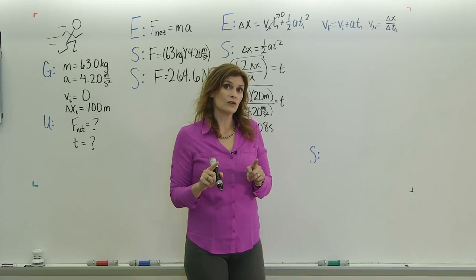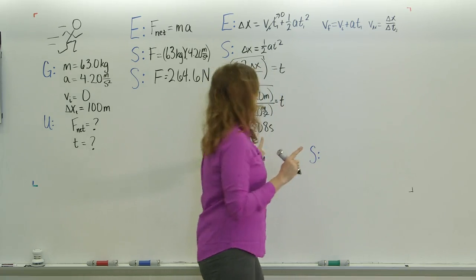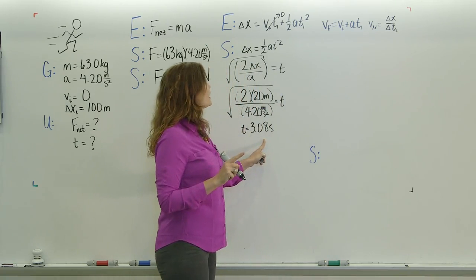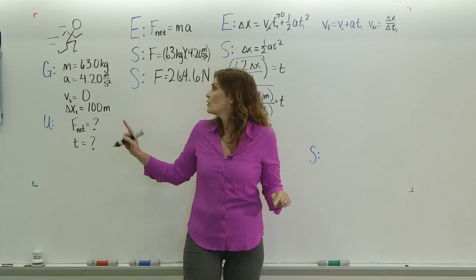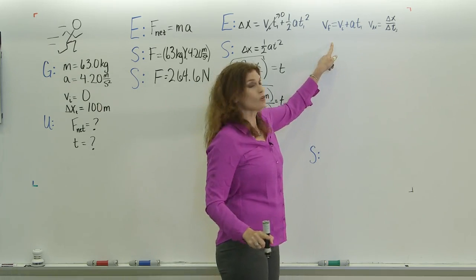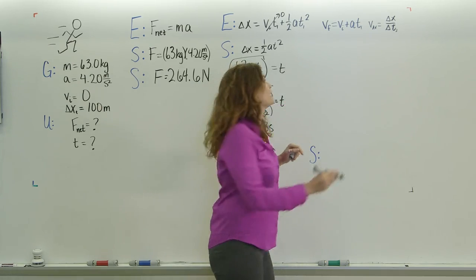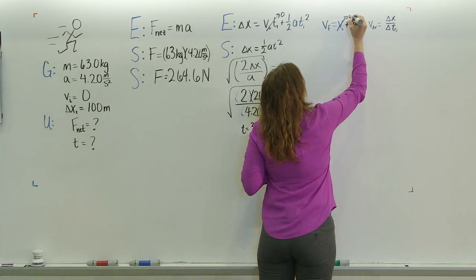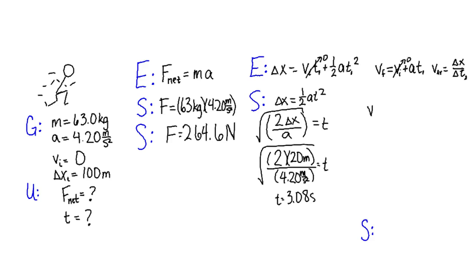If he's accelerated for 3.08 seconds and we know his acceleration was 4.20 meters per second, we can use this equation to find his final velocity. We know his initial velocity was 0, so we get final velocity.